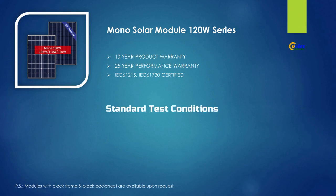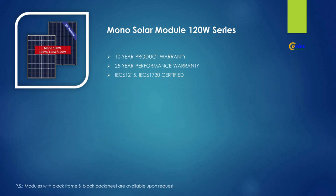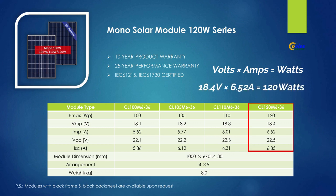Solar panel ratings are given under standard test conditions: the light source is calibrated to deliver 1000 watts per meter squared onto the surface of the panel, and the ambient temperature is kept at 25 degrees Celsius. Taking volts times amps equals watts — using the maximum operating voltage of 18.4 volts multiplied by the maximum operating current of 6.52 amps gives us 120 watts.